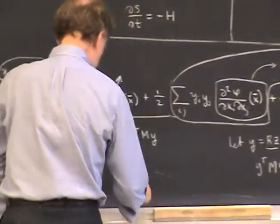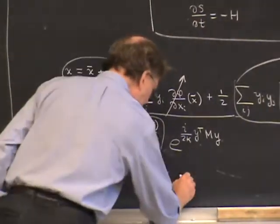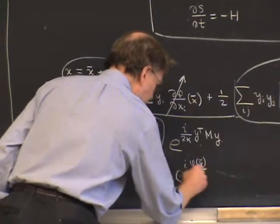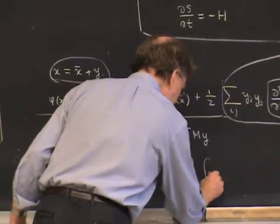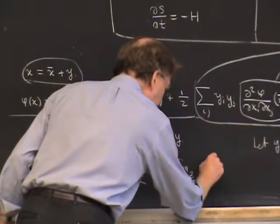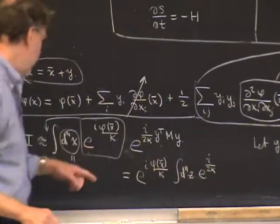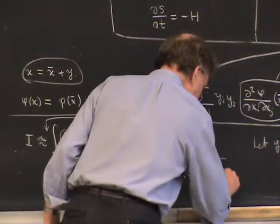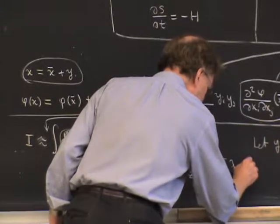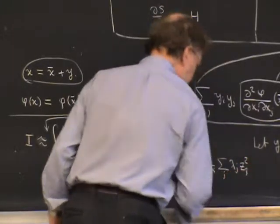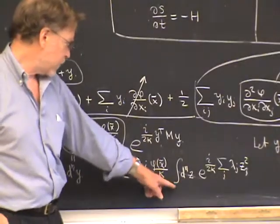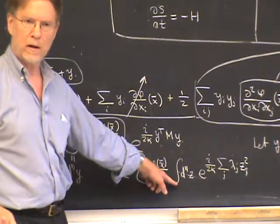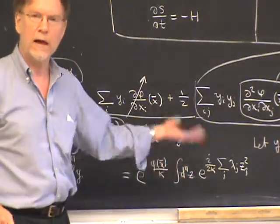The remaining integral then becomes the constant factor e^{i phi(x-bar)/kappa} times the integral d^n z times e^{i/(2 kappa) times the sum over j of lambda_j z_j^2}. This resulting integral in z factorizes into a product of one-dimensional Gaussian integrals, reducing the multidimensional case down to the one-dimensional case.